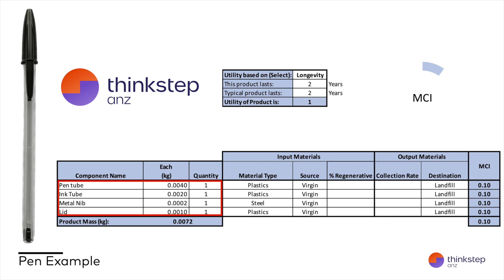On the left hand side of the bill of materials, we have the tube for the pen and the ink tube inside, a metal nib to do the writing, and a lid. We've specified some generic materials for the pen. These are all virgin materials in this case.